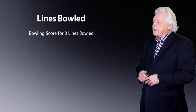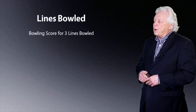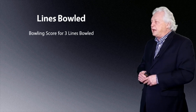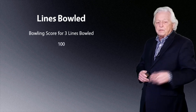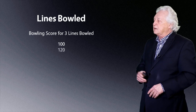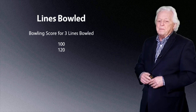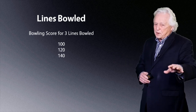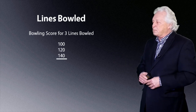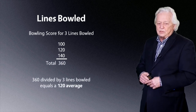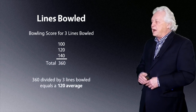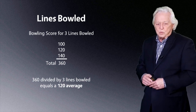This is similar to us going together to a bowling lane, having a couple of beers, and bowling. We just bowled and we're going to take the score for three lines that we bowl. The first one's 100 — we drink a little, we're getting better — we go to 120, we drink some more, we get up to 140. Well, what's our average? You take the sum of those three: it's 360 divided by three, and we have 120.